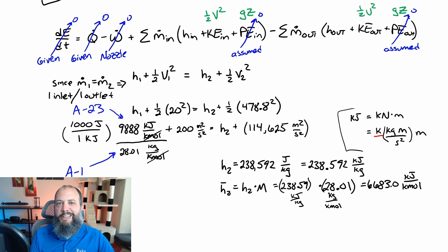You can also see that I had to do a small bit of extra unit analysis because the table gives values in kilojoules. But the kinetic energy term is just meters squared per second squared. There's no kilo in front of it. So in order for the units to cancel out, I need joules, not kilojoules. So that's that extra thousand term. A little bit of calculator work. 6683 kilojoules per kilomole final enthalpy leaving the nozzle.